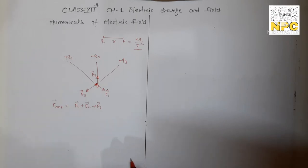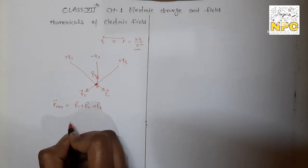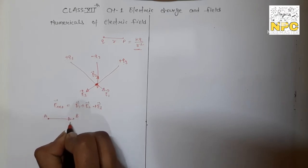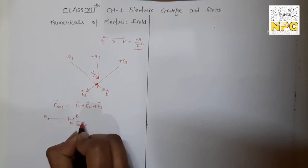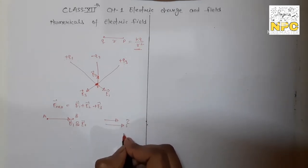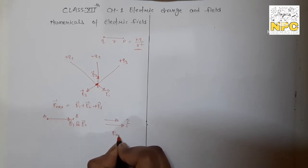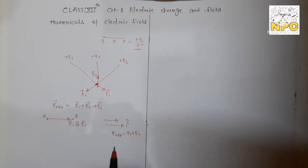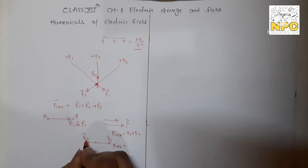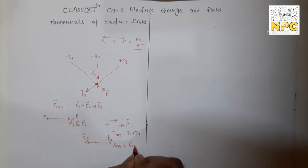One more important thing: if you have electric fields E1 and E2 due to points A and B, and both fields have the same direction, then E_net = E1 + E2. If they are in opposite directions, then subtract the smaller from the larger — if E1 > E2, then E_net = E1 − E2; if E2 > E1, then E_net = E2 − E1.